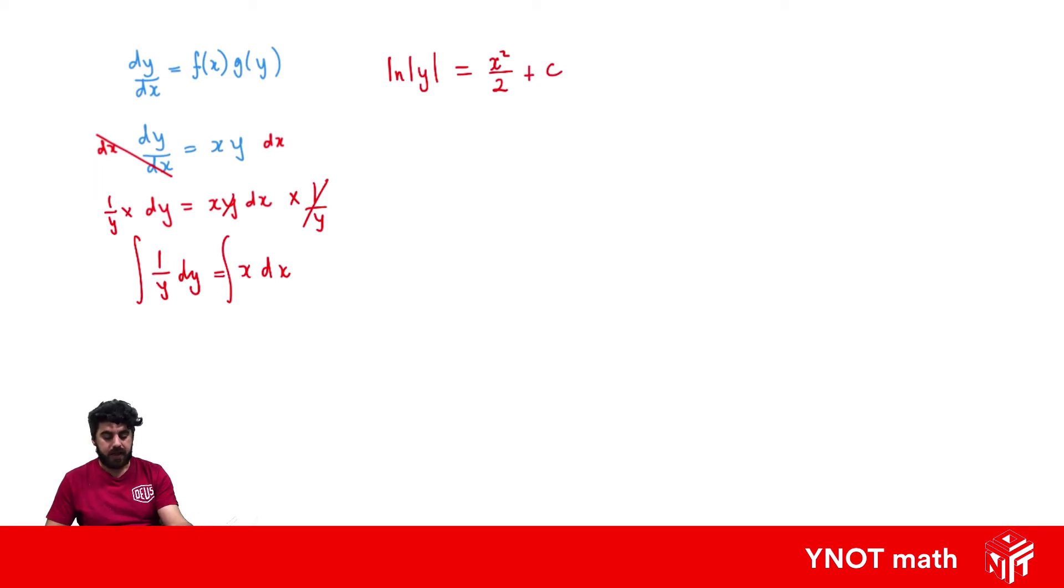And now we can just take both sides and make them a power using a base of e to get an expression for y. So we get e to the power of ln of absolute value of y equals e to the power of x squared over 2 plus a constant. This leaves us with the absolute value of y equals e to the x squared over 2, and we'll just rewrite this as being multiplied by e to the c.